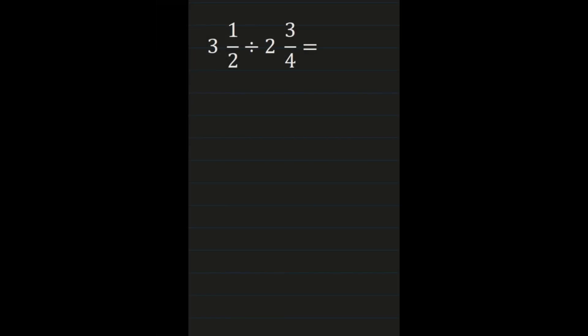Our second example, we have 3 and a half divided by 2 and 3 fourths. Our first step, just like with our last problem, is to turn these mixed numbers into improper fractions. For 3 and a half, we multiply the denominator times the whole number: 2 times 3 is 6. Then we add 6 to the numerator: 6 plus 1 is 7.